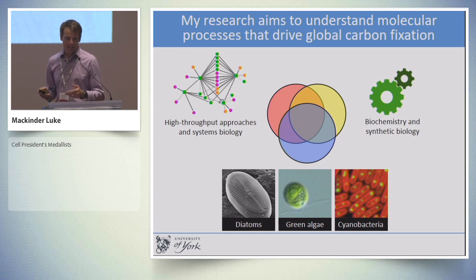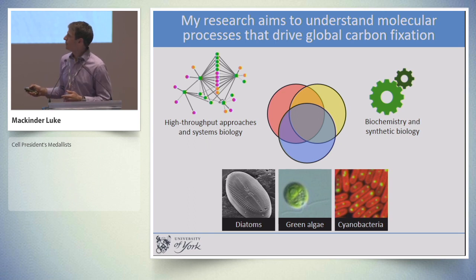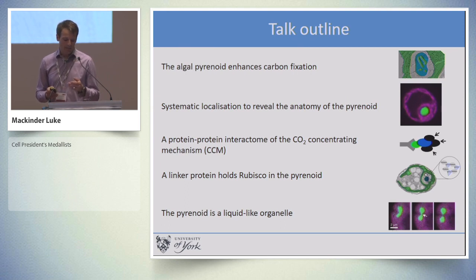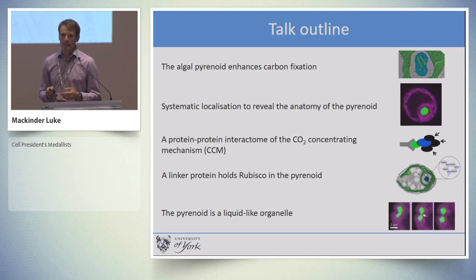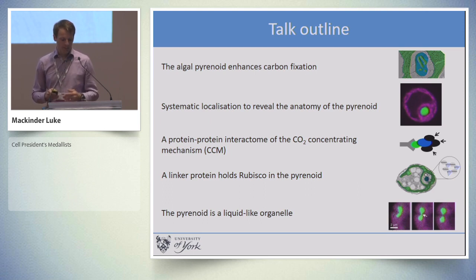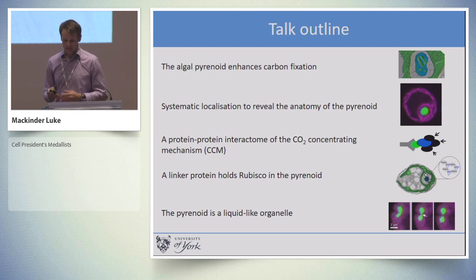Most of the work I'm going to present today is based on recent work we've done in green algae and understanding an organelle called the pyrenoid. First I'll talk about how the algal pyrenoid enhances carbon fixation, then go into depth on a systematic localization approach we developed. We then built a protein-protein interactome of the CO2 concentrating mechanism and the pyrenoid, discovered a protein that links rubisco together, and showed that the pyrenoid is a liquid-like organelle that phase-separates within the chloroplast.